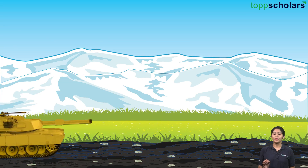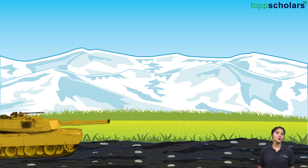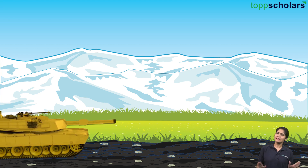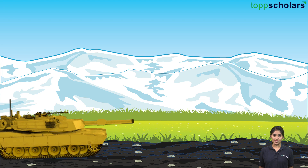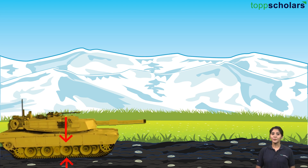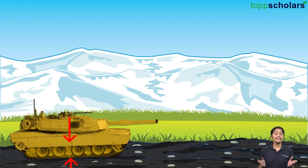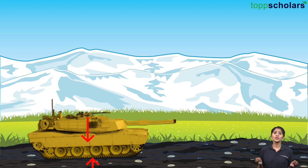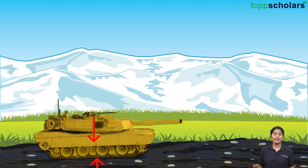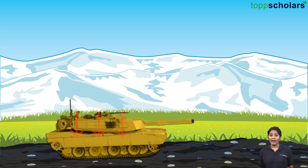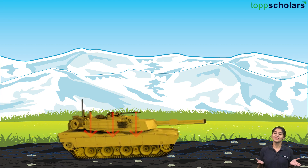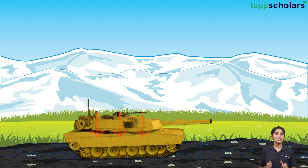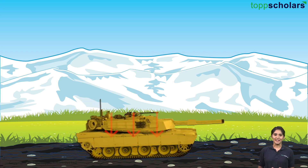But if you put caterpillar tracks, even though the force — the weight of the tank — has not changed, look at the contact area: it has increased significantly. There is a huge contact area now. The force gets divided and as a result the pressure gets lower. That's the whole idea.